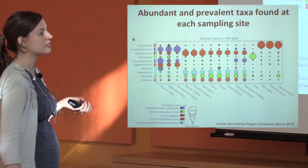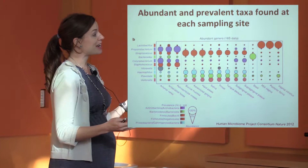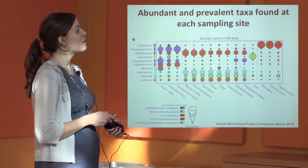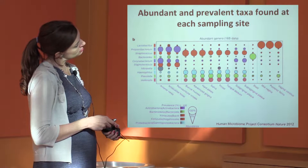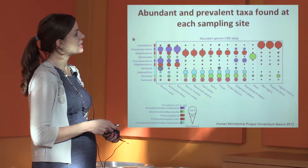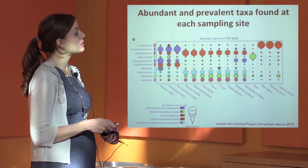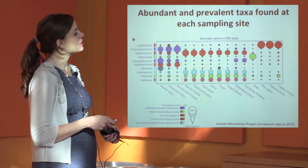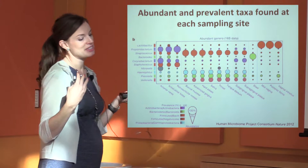Looking at the specific names of bacteria present at each site: the skin has large amounts of Propionibacterium, as indicated by the size of these circles. The oral microbiome contains a lot of bacilli. The gut microbiome contains a lot of bacteroidetes. The vagina contains a lot of lactobacillus. The size of these circles indicates how abundant those types of bacteria are at each of those sites.